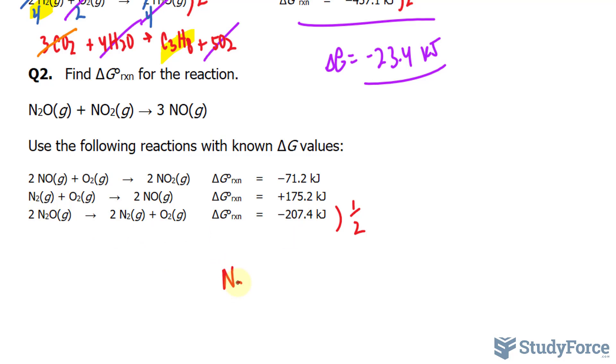this becomes N2O, that becomes N2, and that becomes half an oxygen molecule. Also keep in mind that we would have to divide this by 2. So I'll write down half, negative 207.4.